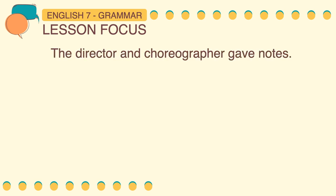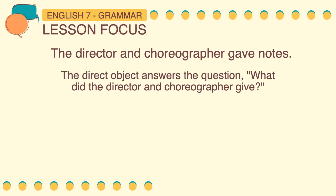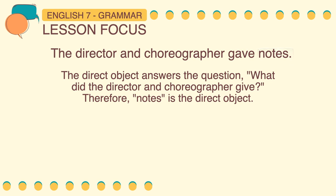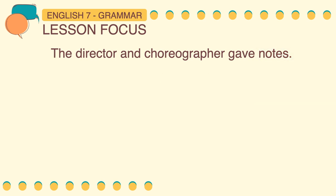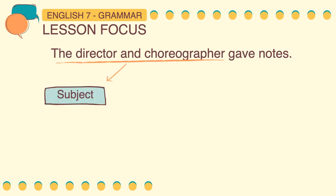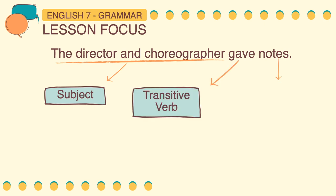Next sample sentence: The director and choreographer gave notes. The direct object answers the question: what did the director and choreographer give? The answer is notes, so notes is the direct object. The sentence pattern is: the director and choreographer is the subject, gave is the transitive verb, and notes is the direct object.